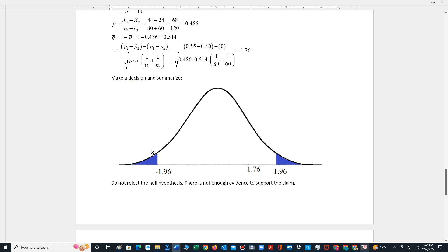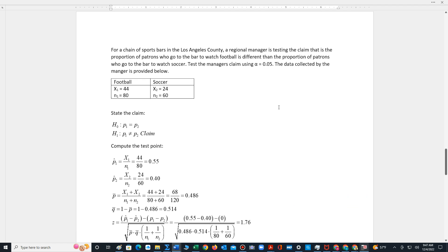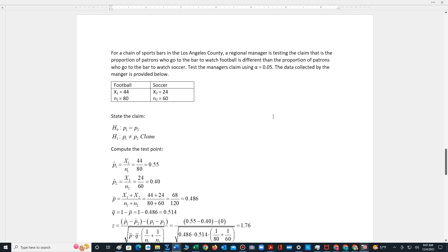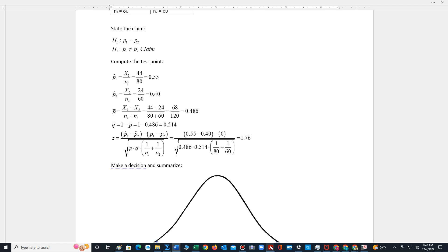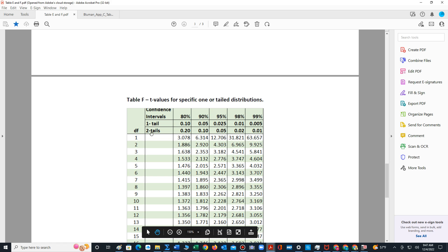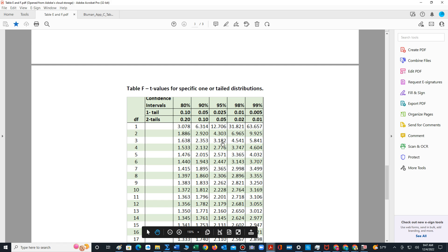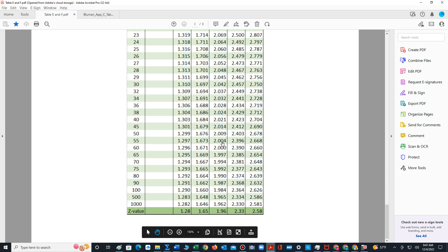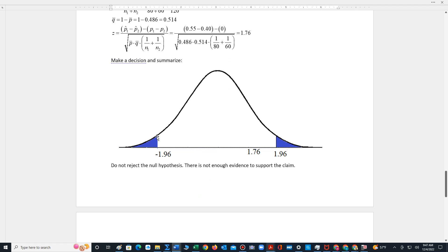We now have to make our decision. It's a two-tail test, so we look up the critical values at alpha 0.05, two tails. Go all the way down to get the z-values for a z-test: 1.96. So the critical values are negative 1.96 and positive 1.96. 1.76 falls in the non-critical region, so we do not reject the null hypothesis.